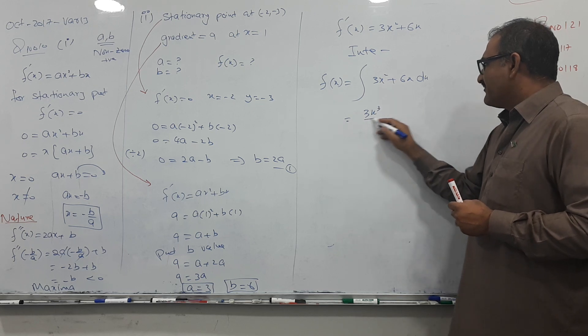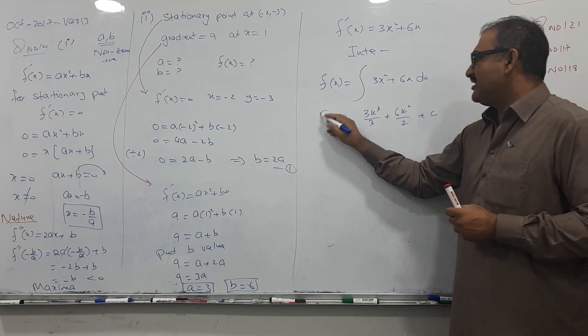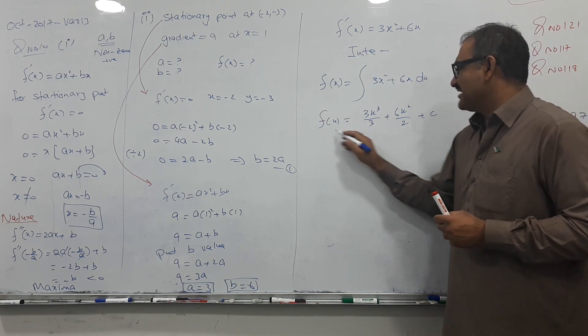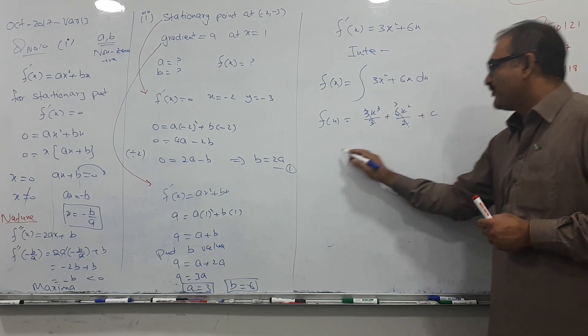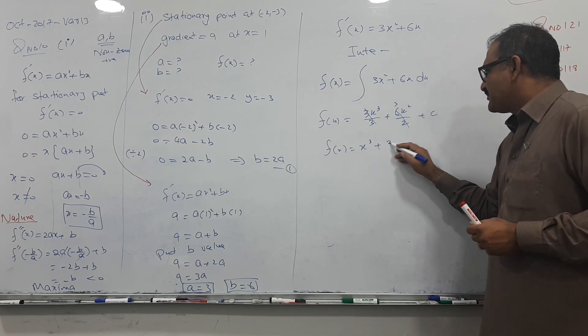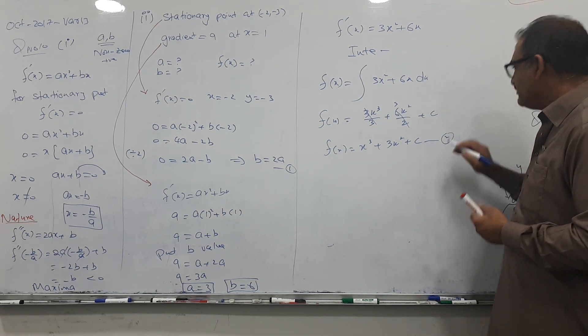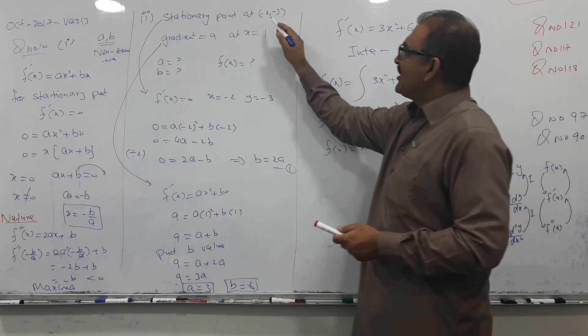Increase the power by 1, divide by same, increase the power by 1, divide by same, and c is compulsory. Up till now all understanding, cancel, cancel, I got 3. fx is equal to x³ plus 3x² plus c equation number 2, no problem.